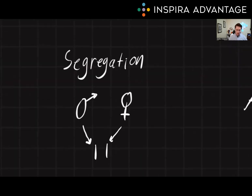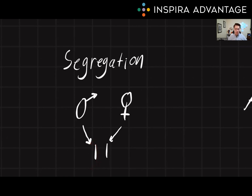The first law is the Law of Segregation. This law states that during the formation of gametes, the two alleles of a gene separate from each other so that each gamete only carries one allele, symbolized with this vertical line here. This results in the offspring inheriting one allele from each parent.